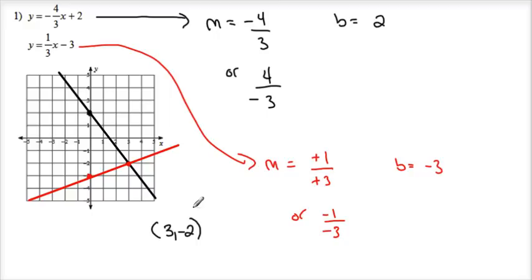Graphically is great, but sometimes your numbers could be really big. What if my slope was negative 40 over 32 and my y-intercept was 255? Then we really don't want to count all those spaces — it gets a little annoying. So what do we do? What's our other route? We're going to use a little bit of algebra.